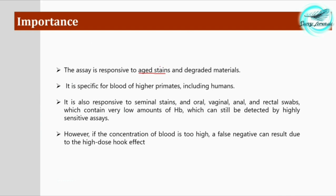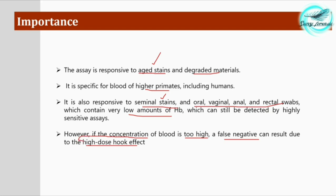The immunochromatographic assay is responsive to aged stains — we can determine the presence of aged blood stains through these tests — and also to degraded materials. It is specific for blood of higher primates including humans. It is also responsive to seminal stains, so we can detect human seminal stains and oral, vaginal, anal, and rectal swabs in very low amounts. It is a highly sensitive test. However, if the concentration of blood is too high, false negative results can occur due to the high-dose hook effect.